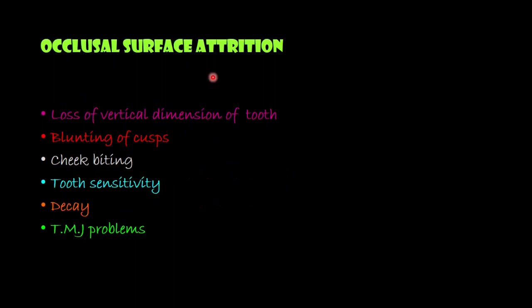In occlusal surface attrition, we can see facets present on the occlusal surface. There will be flattening of the cuspal inclines, or in severe cases we can see reverse cuspal situation, leading to loss of vertical dimension. If such changes occur over a short span of time and are generalized and severe in nature, there is no chance for the alveolar bone to erupt occlusally to compensate for the tooth loss, resulting in vertical dimension loss and overclosure during mandibular movement.